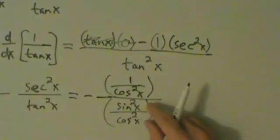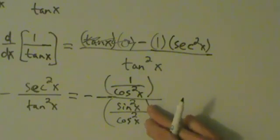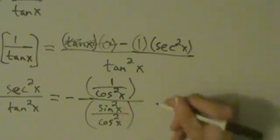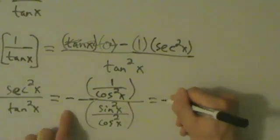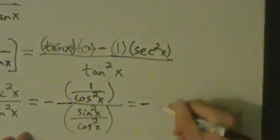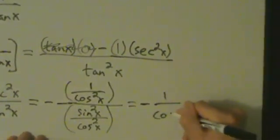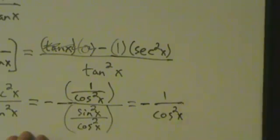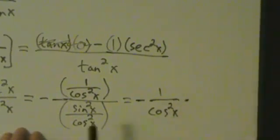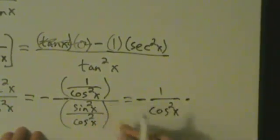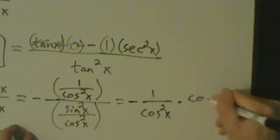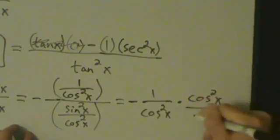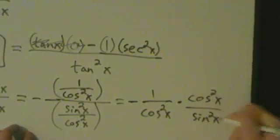So if you divide by this fraction here, that's just like multiplying by its reciprocal. So we still have this minus sign, just kind of chilling out there, not really doing anything. Now we have 1 over cosine squared of x. Now we're going to multiply by the reciprocal of this big denominator here. So that's going to be cosine squared of x over sine squared of x.